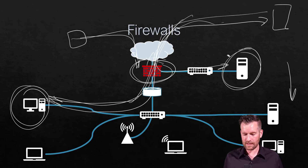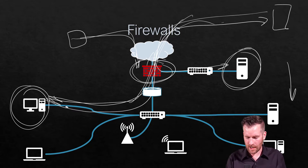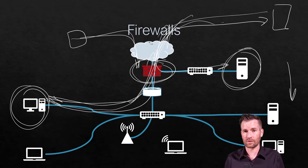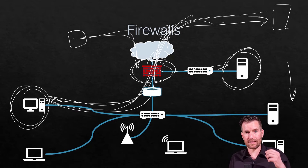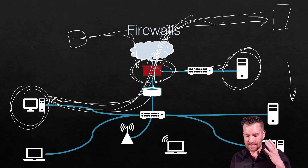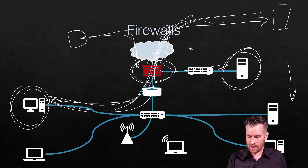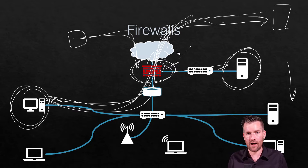Generally speaking, a firewall allows traffic to go out to the rest of the world, but doesn't allow traffic to come back in unless it's traffic that's been requested or the firewall is specifically configured to allow that traffic in.